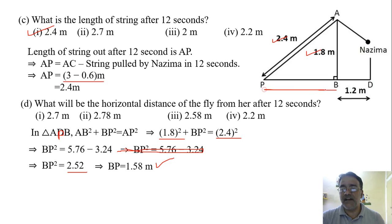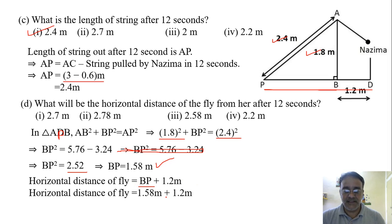So this distance we got. Now what we have to do? We have to add the total distance. That means we have to add 1.2 meter to 1.58 meter. So horizontal distance of fly, that is BP plus 1.2 meter, and BP we got 1.58. If we add these two, we'll get the final answer that is 2.78 meter. So the correct option is the second one.